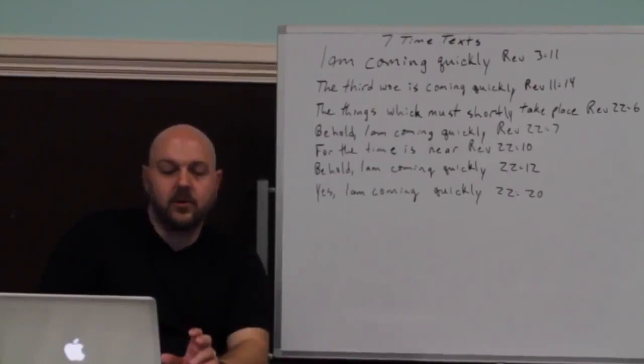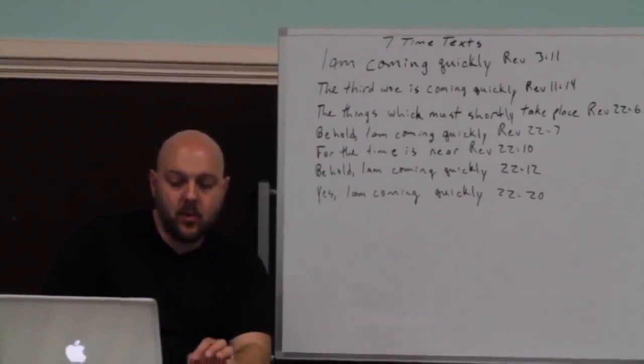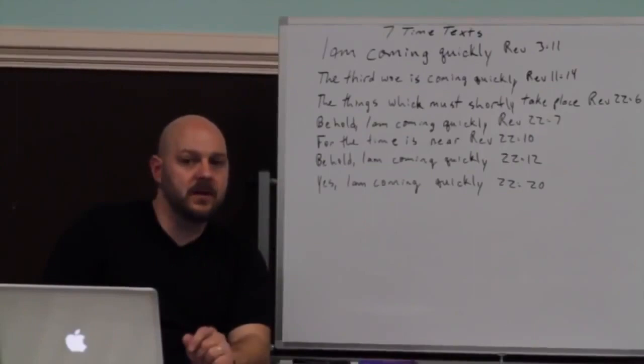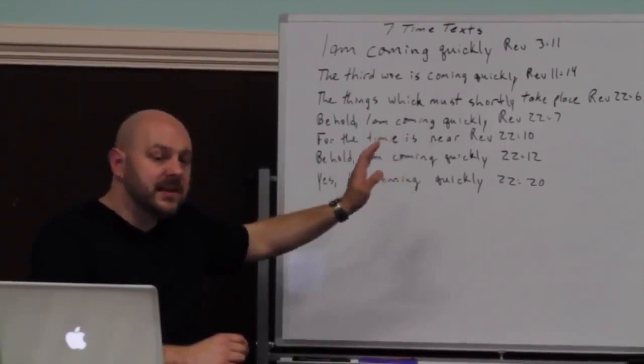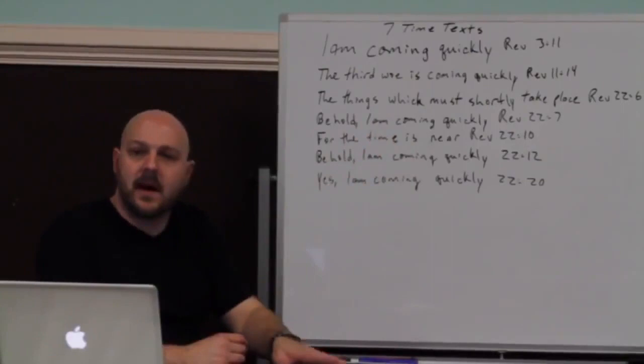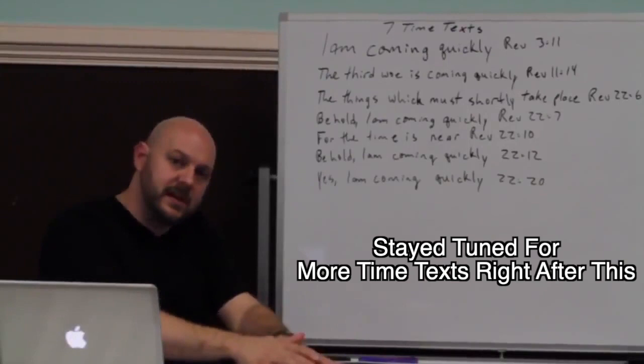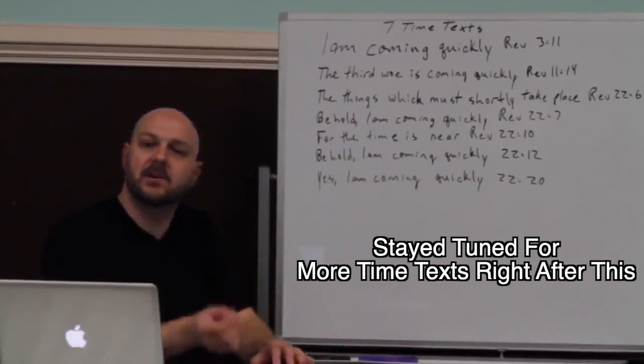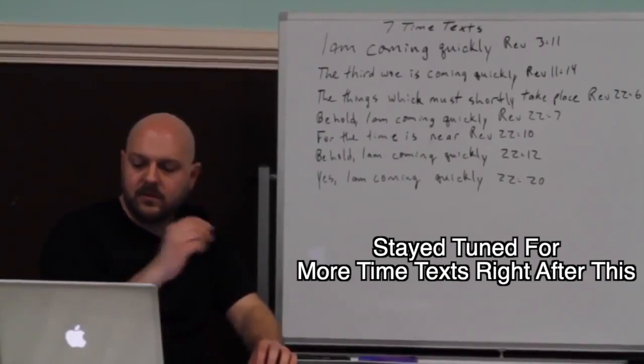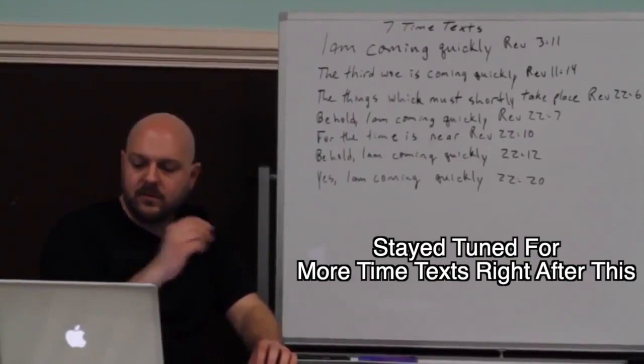One last quote. This is from the scholar Gordon Fee. He wrote, a text cannot mean what it never could have meant to its author or his or her readers. Meaning, soon never meant 2,000 years to them. Quickly never meant 2,000 years later. If it didn't mean it to them, it couldn't mean it to us. We can't twist it to make it fit for us. It's violating scripture to do that. It's just not the right way to make the Bible fit your paradigm. It has to fit naturally with what the scripture actually means and what it would have meant to the author writing it down. As Gordon Fee has so brilliantly put it, a text cannot mean what it never could have meant to its author or his or her readers.